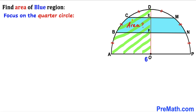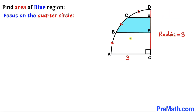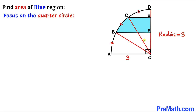Once we have calculated this area we can simply multiply it by two to get the area of the whole semicircle. We are going to focus on this quarter circle, which has an angle of 90 degrees. The three arc length segments — AB, BC, and CD — are equal.